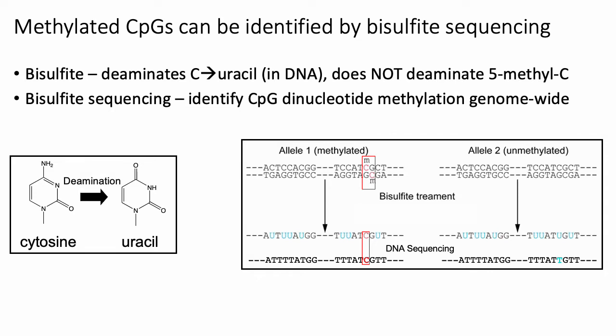One of the common approaches to assaying methylation status of CpG dinucleotides is through bisulfite sequencing. When you treat DNA with bisulfite, this deaminates cytosines and changes them into uracil in DNA. The key part is that methylation protects this deamination — methylated cytosines do not get deaminated. In bisulfite sequencing, since you know where all the cytosines and CpGs are, when you treat with bisulfite, all unmethylated cytosines get converted to uracil, all methylated cytosines stay as cytosines, and that gets reflected by DNA sequencing.